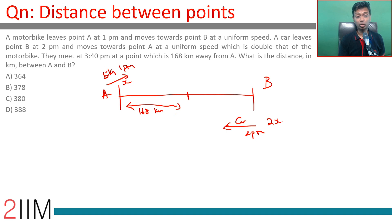This is 100 minutes... sorry, 1 to 3:40, so it is 2 hours and 40 minutes, or 8/3 hours. A has traveled for 8/3 hours. B at the same time has traveled not 8/3 hours but only 5/3 hours.